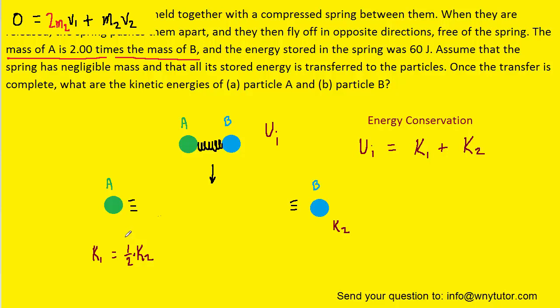We have determined that k1 was equal to half of k2, so we can replace k1 in the energy equation with one-half k2. Of course, then we can combine these like terms to make three-halves k2.